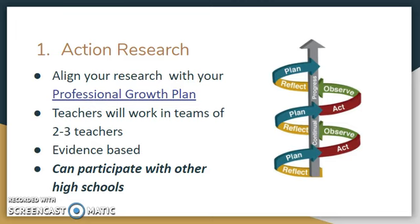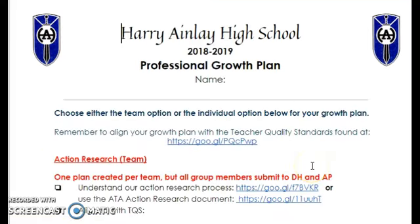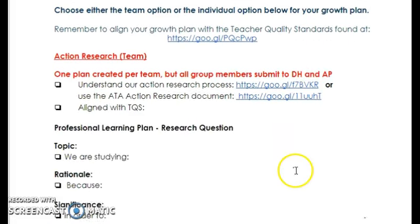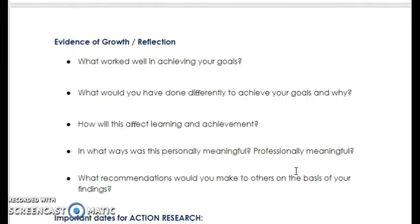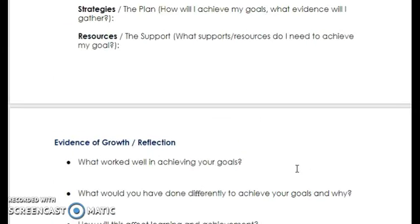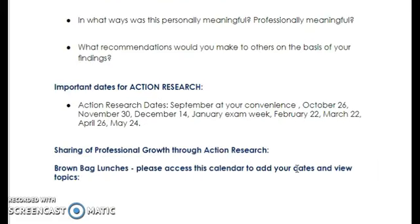Remember to work in groups of two to three, collect some kind of evidence that works for you, and if necessary feel free to work with other high school teachers. This link shows you the professional growth plan for 2018-19. Instructions for filling it out are found here and you will continue to complete and then submit it to your department head. Dates for the action research are located at the bottom.